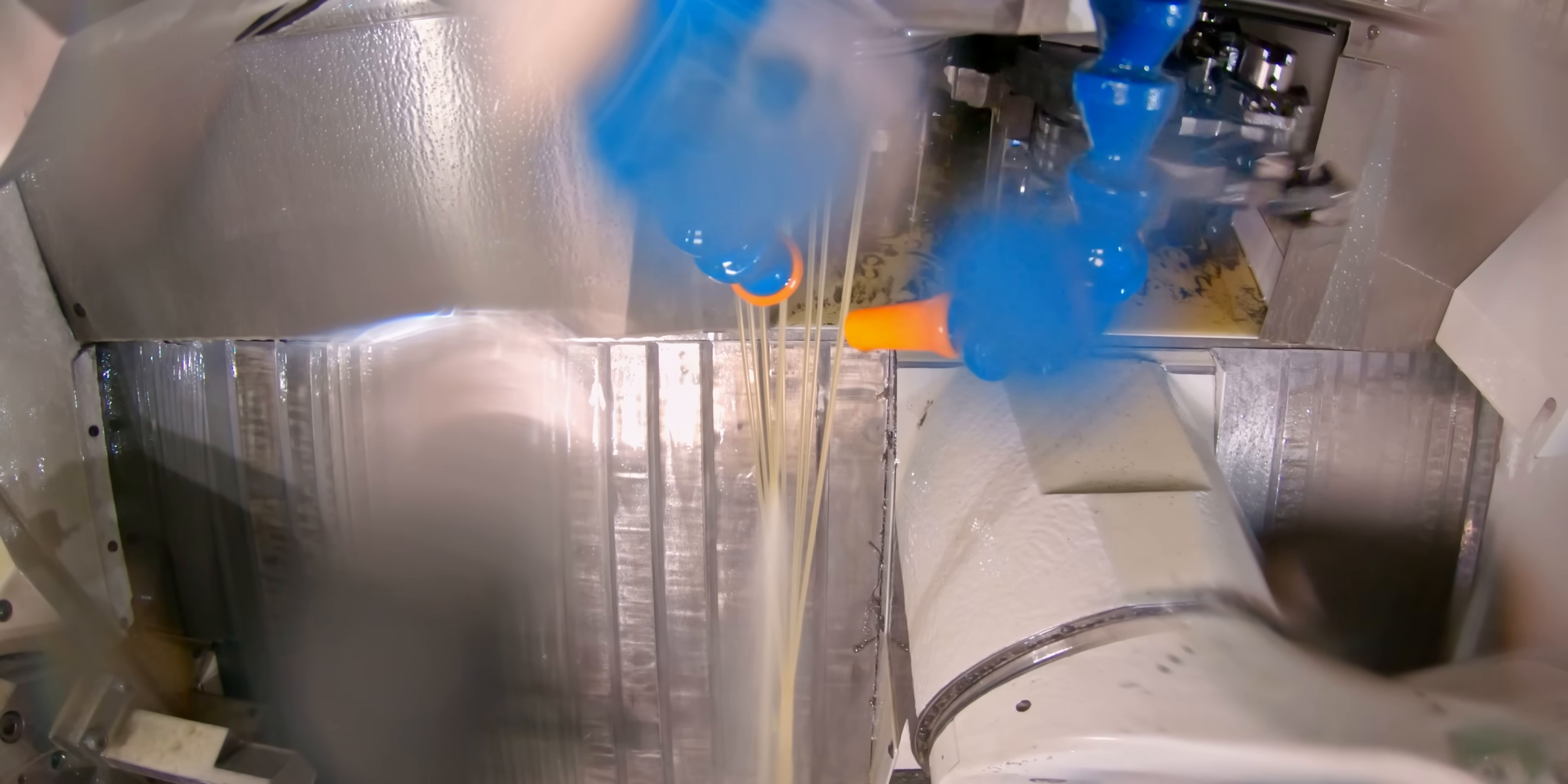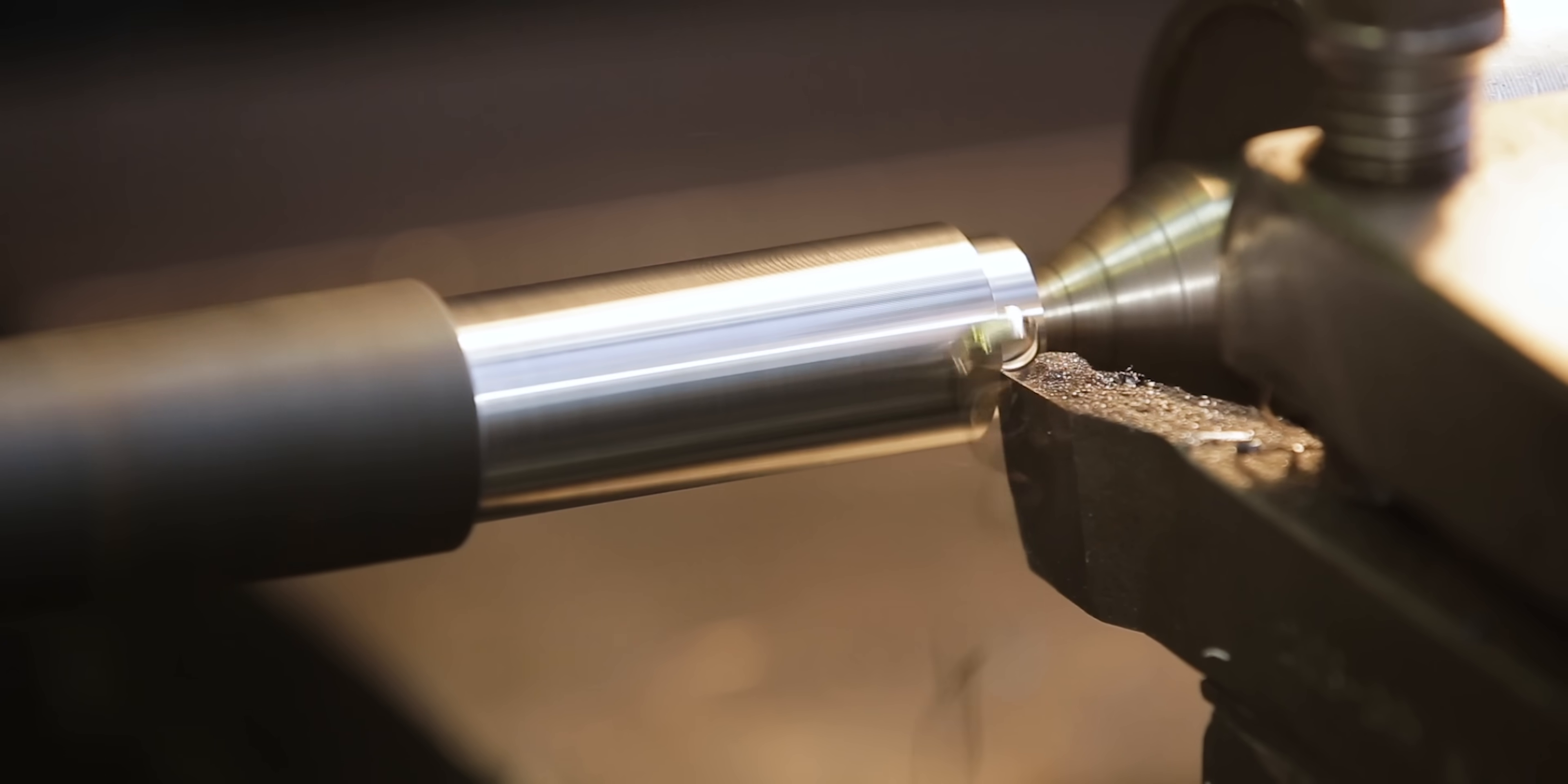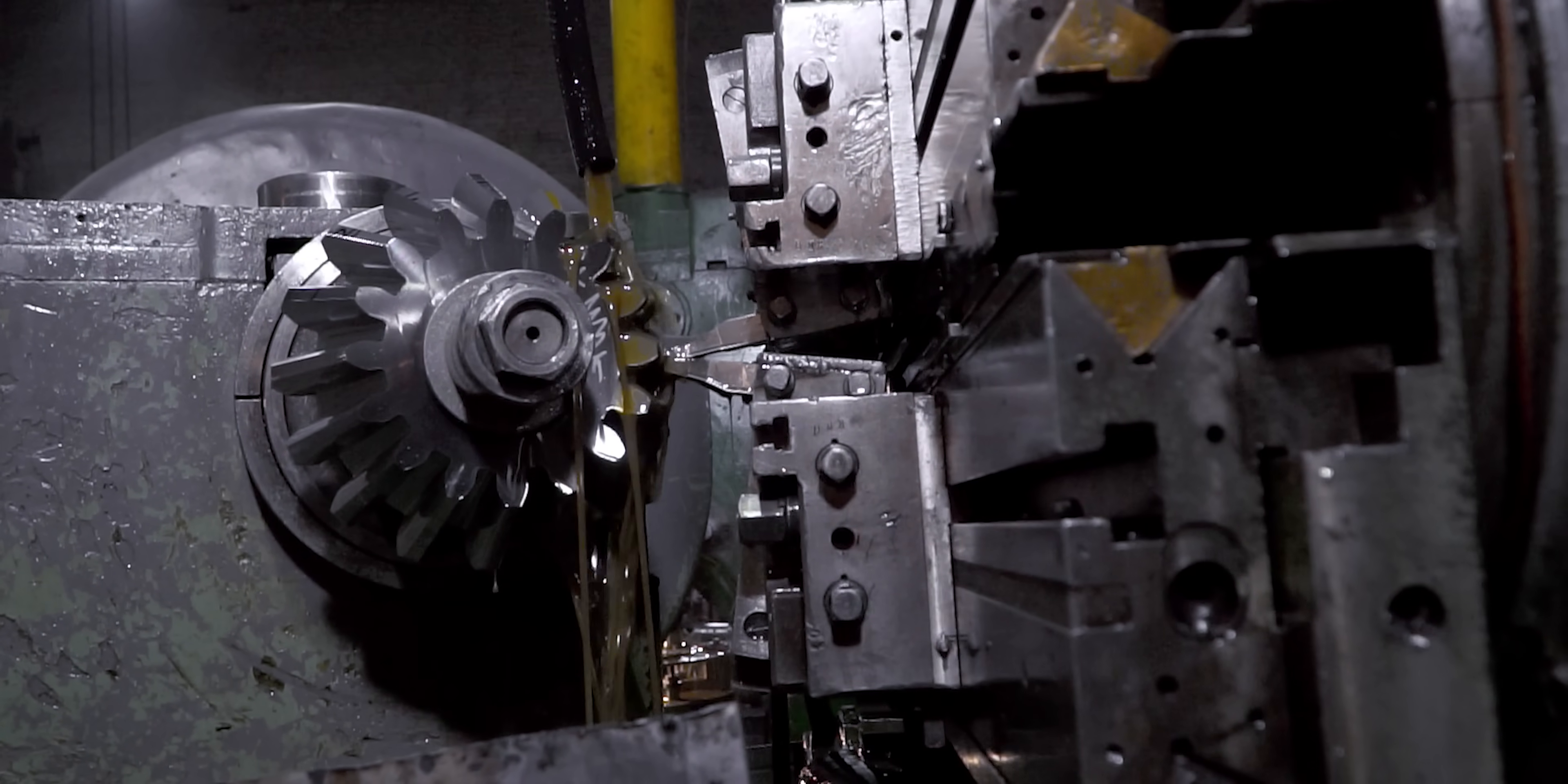When this happens, it can make the entire machine jump off the floor from the centrifugal force. Sometimes the bar breaks and becomes an extremely high speed projectile. If you don't have what you need to do a job safely, then don't do the job.